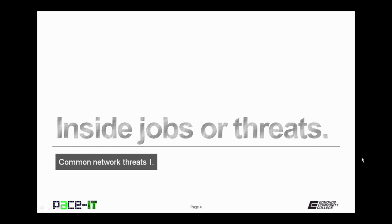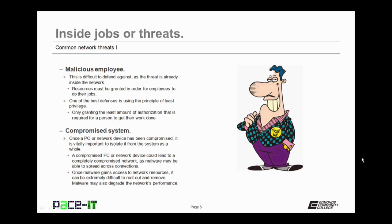First up is malicious employees. We may not know the reason why they're malicious, but they are difficult to defend against as they are already inside the defenses of the network, and because their employee resources have been granted to them in order for them to do their job. One of the best defenses against malicious employees is using the principle of least privilege — only granting the least amount of authorization required for a person to get their work done.